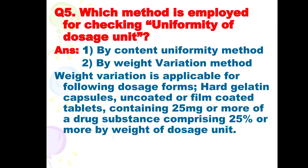Next is: which method is employed for checking uniformity of dosage unit? Two methods are employed: number one, by content uniformity method; and number two, by weight variation method. Weight variation is applicable for the following dosage forms: hard gelatin capsules, uncoated and film-coated tablets containing 25 mg or more of a drug substance, comprising 25% or more by weight of the dosage unit.